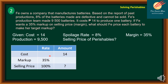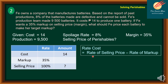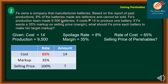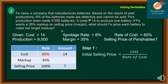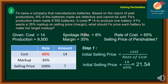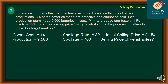Step 1: Find the initial selling price. Since this is markup on selling price (margin), the rate of cost equals the rate of selling price minus the rate of markup: 100% minus 35% equals 65%. The initial selling price equals cost divided by rate of cost: 14 divided by 65% equals 21.54 pesos. This is the formula adjustment needed when markup is based on selling price rather than cost.